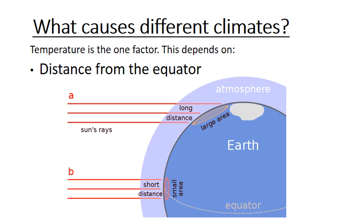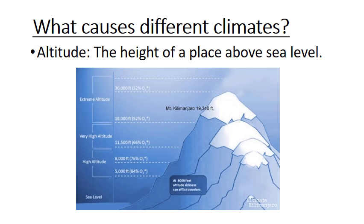Now let's talk about what causes different climates. Temperature is one factor, and this depends on — number one — distance from the equator. Normally, the closer we are to the equator, the warmer it will be. At the north or south poles, it will be bitterly cold.